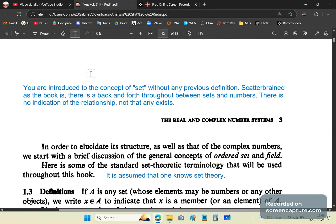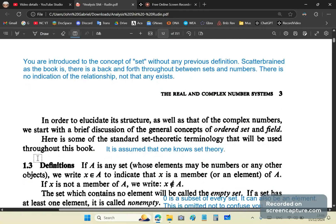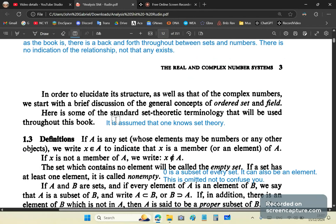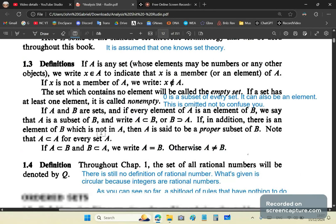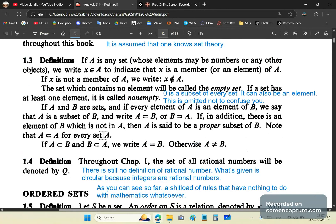So you're introduced now to the concept of set without any previous definition. As scatterbrained as the book is, there is a back and forth throughout the whole book between sets and numbers. There's no indication of the relationship, not that any exists, but it's kind of taken for granted that you're going to go back and forth. You're going to be talking about sets, numbers, elements, numbers. It's a whole mishmash of garbage.